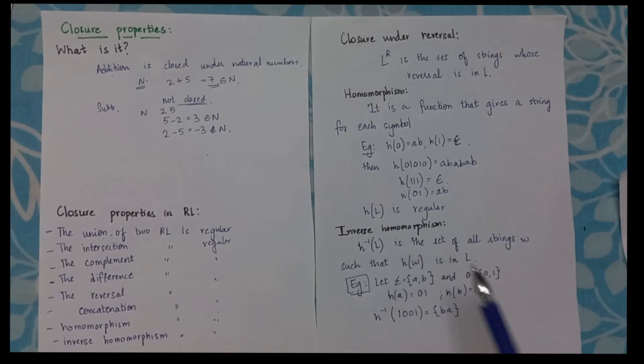What is inverse homomorphism? Now inverse homomorphism means from the string I get the symbol. So let us consider h(A) is giving me 01. h(B) is 10. So now what will be h inverse of 1001? See this 10 is nothing but B. This indicates 01 indicates A. So my final result is BA. This is the operation of inverse homomorphism and this is also closed under regular languages.